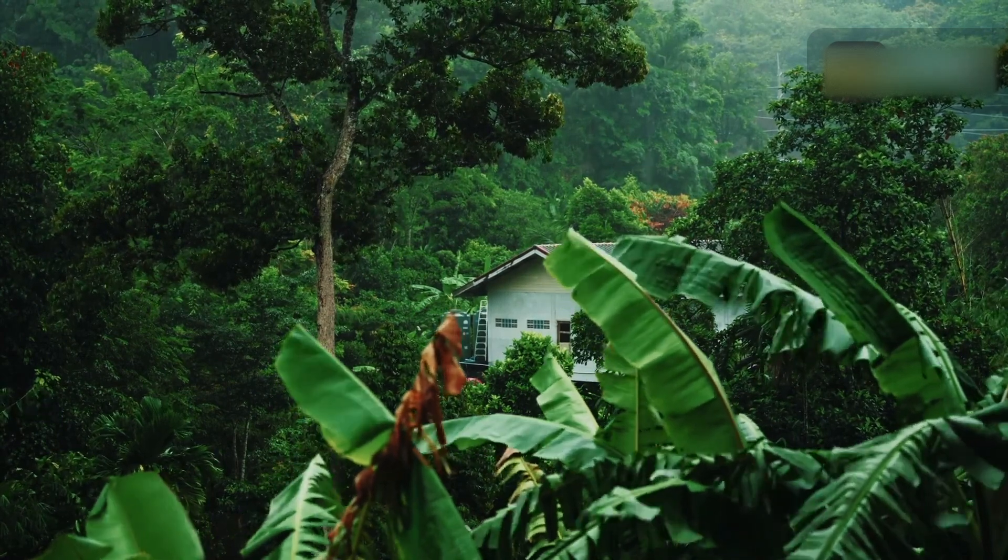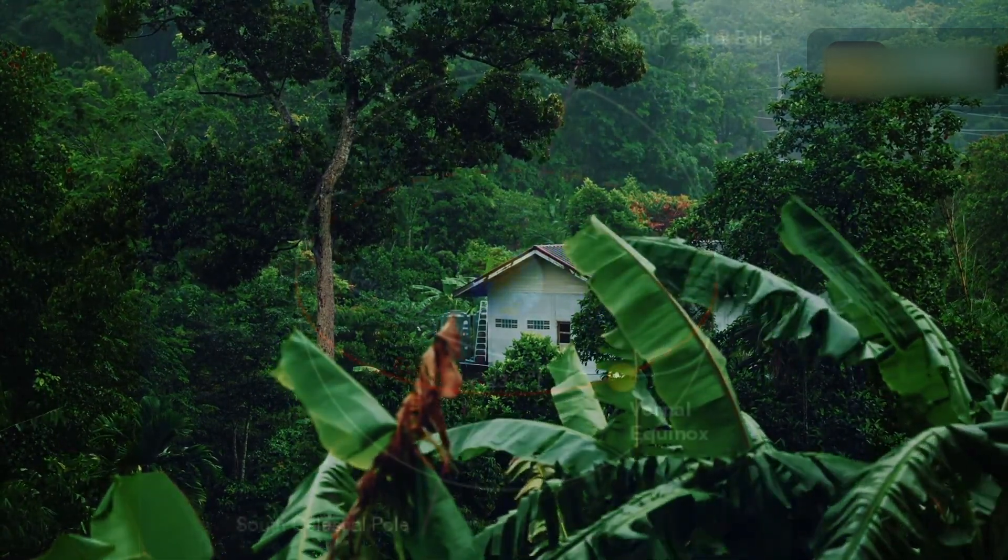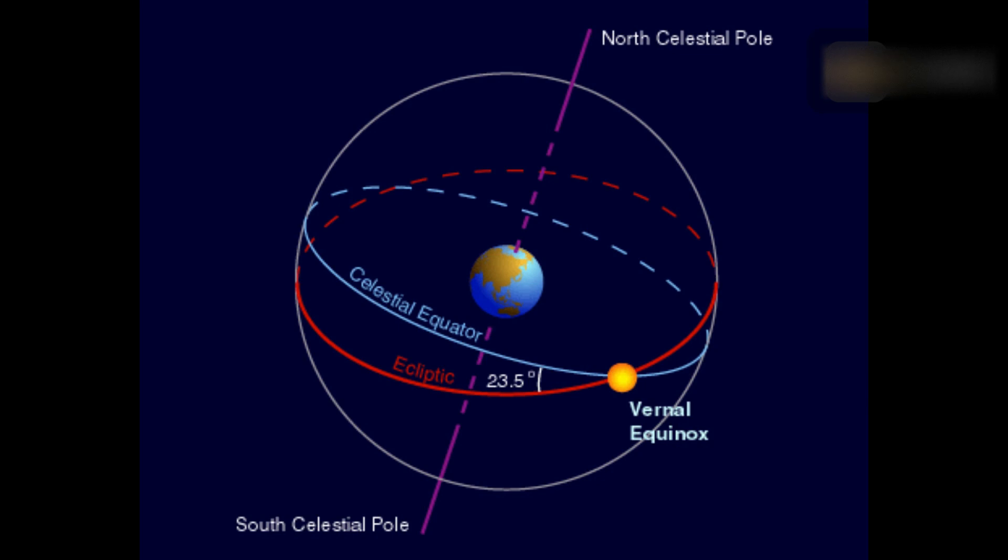March equinox is the moment when the sun crosses the celestial equator, the imaginary line of the sky above the Earth's equator from south to north. This takes place every year on March 19th, 20th or 21st.